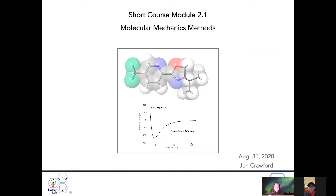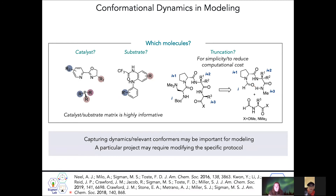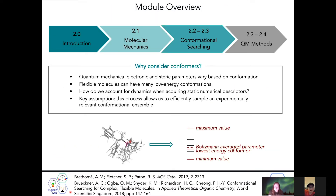Laurie asks her first question: when you mentioned low energy conformations, is there a specific numerical value associated with low energy? What is the technical definition, if there is any? In general, when we do a conformational search, we set the cutoff at around five kilocalories per mole.